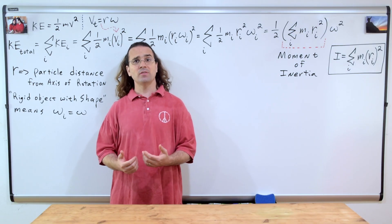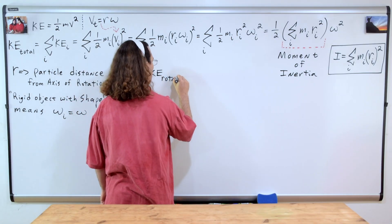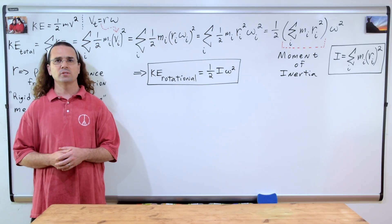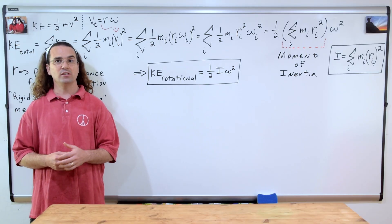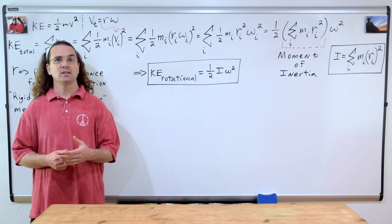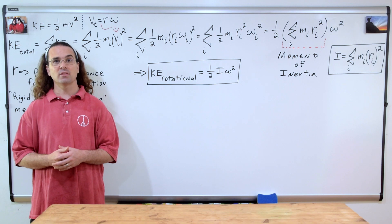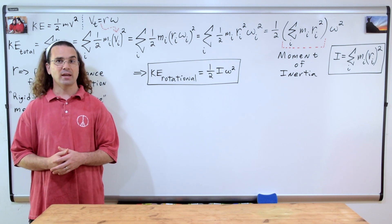When we substitute that back into the equation for the total kinetic energy of the rotating object, we get: the total kinetic energy of the rotating object, or what is called the object's rotational kinetic energy, equals one-half times the moment of inertia of the object, times the square of the angular velocity of the object.